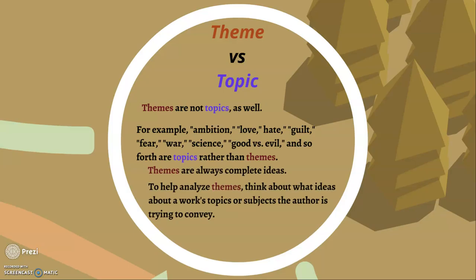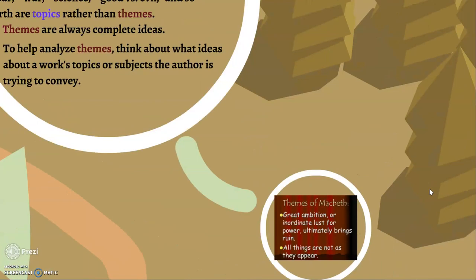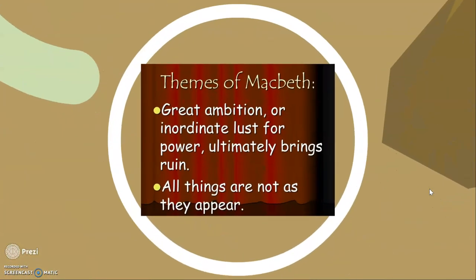To help analyze themes, think about what ideas about these topics or subjects the author is trying to convey. So what idea about ambition, what idea about love, is Shakespeare trying to convey through Macbeth? What ideas is Kira Sauer trying to discuss, a little bit differently from Shakespeare's focus on good versus evil? So themes will look like this: Macbeth's great ambition or inordinate lust for power ultimately brings ruin. That's a theme because it's a specific concept related to ambition.